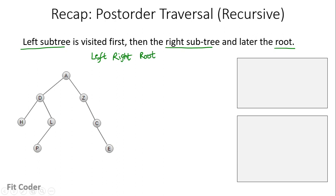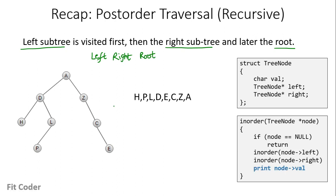The post-order traversal of the given tree is this. I have already made a video explaining the recursive method and a shortcut method of writing down the post-order traversal. I will link that video in the top right corner — you can have a look if you have any doubts on that.